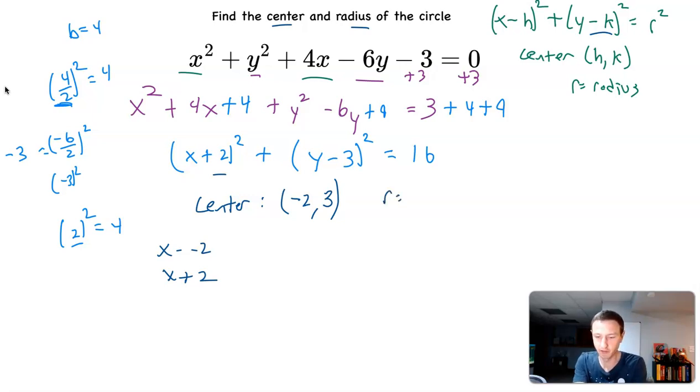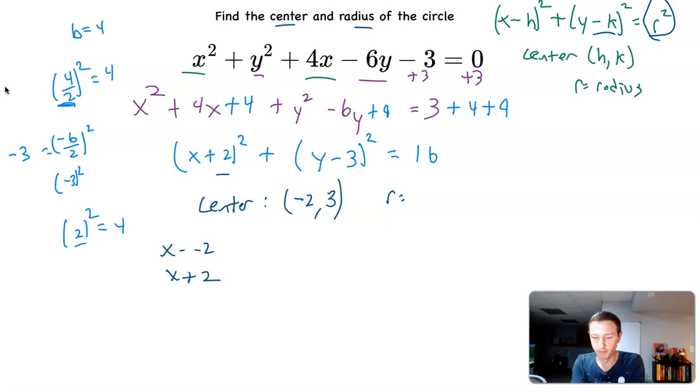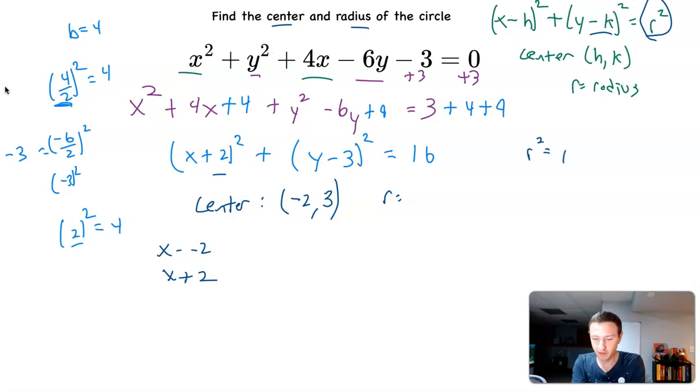Then the radius, remember, the equation of the circle is r squared. So my r value isn't 16. This is r squared. So r is going to be the square root of 16, which is 4.